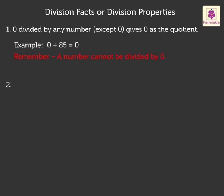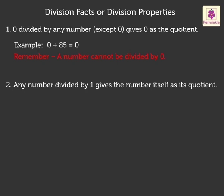2. Any number divided by 1 gives the number itself as its quotient. For example, 18 divided by 1 is equal to 18.